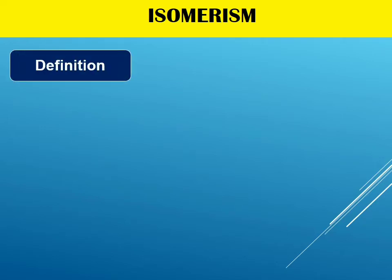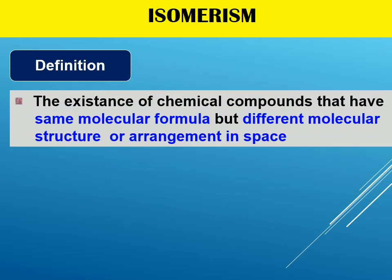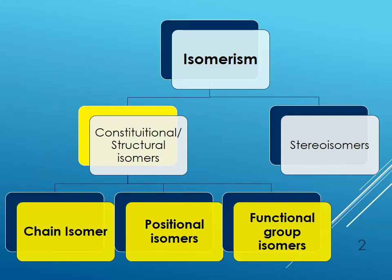Isomerism can be defined as chemical compounds that have the same molecular formula but different molecular structure or arrangement in space. Isomerism can be split into two main groups: constitutional isomers and stereoisomers.